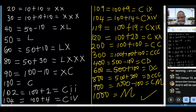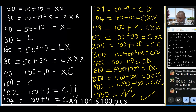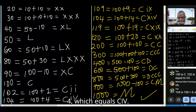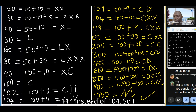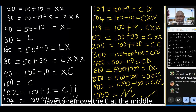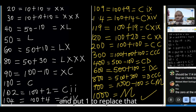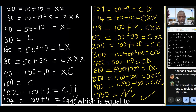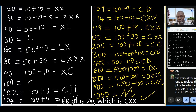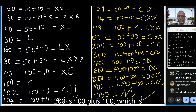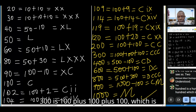One hundred is C. One hundred and two is 100 plus 2, which equals CII. One hundred and four is 100 plus 4, which equals CIV. One hundred and nine equals CIX. One fourteen is 100 plus 14, which equals CXIV. One nineteen is 100 plus 19, which is CXIX. One twenty is CXX. Two hundred is CC. Three hundred is CCC.